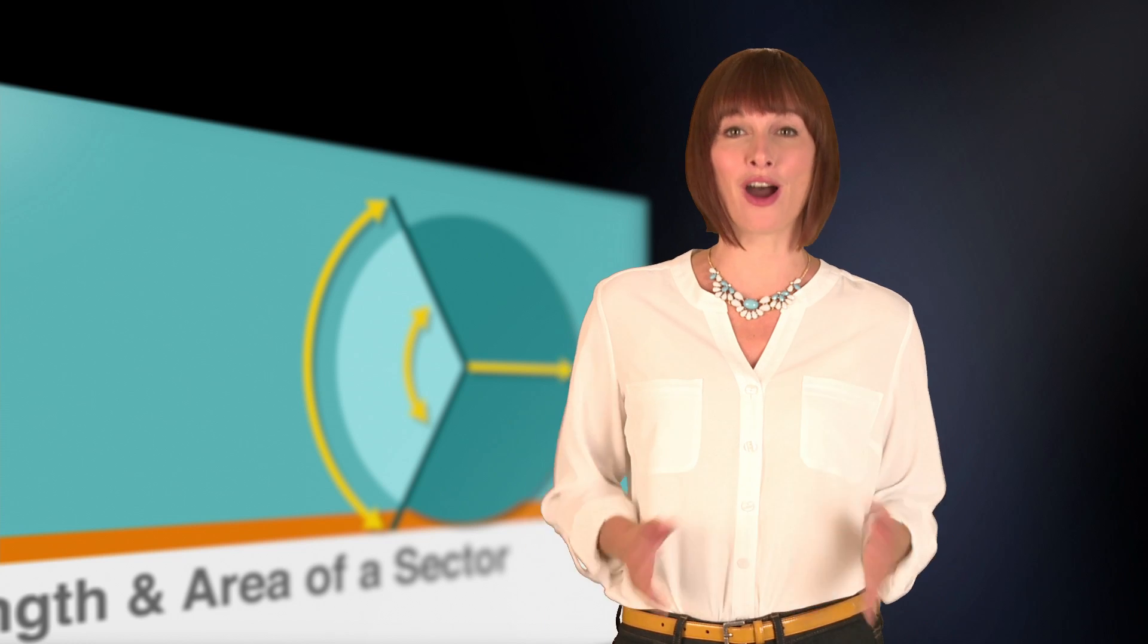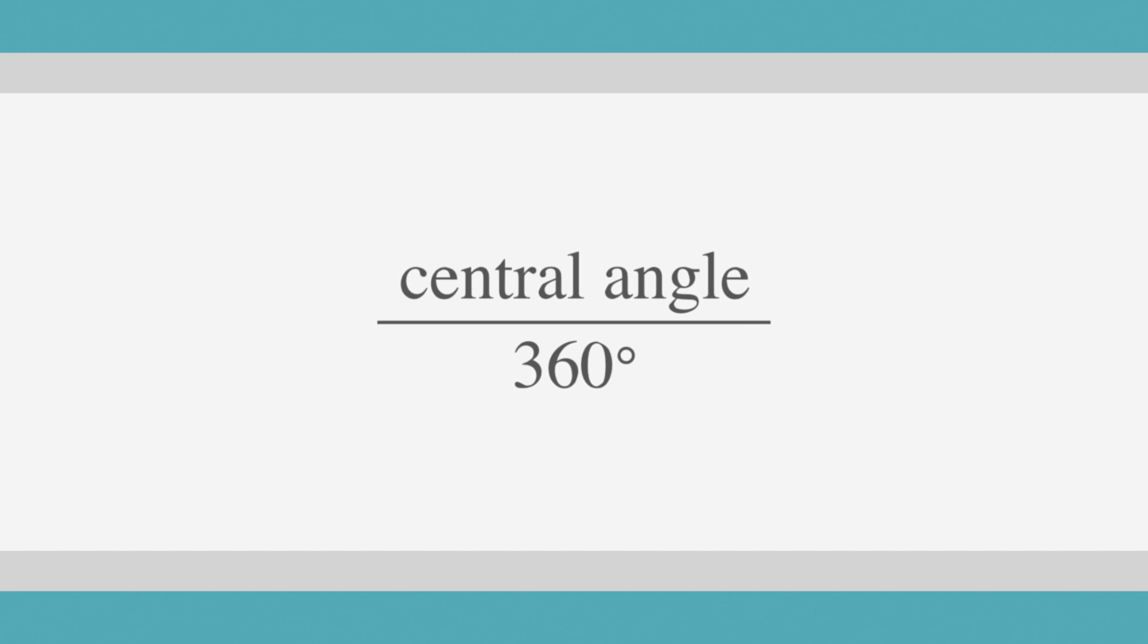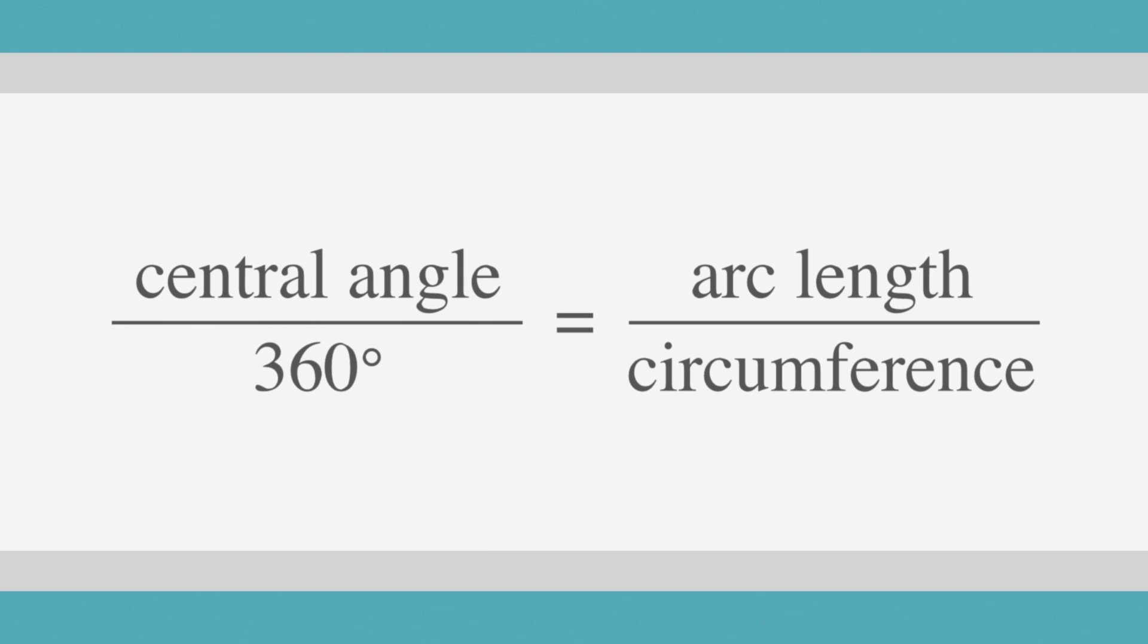Now that we understand these portions of a circle, we're ready to get into some formulas. Let's start with arc length, which is a fraction of the circumference. Our part-to-whole ratio is the central angle divided by 360 degrees, which is the total degrees in a circle. This is equal to the arc length divided by the circumference of the circle.